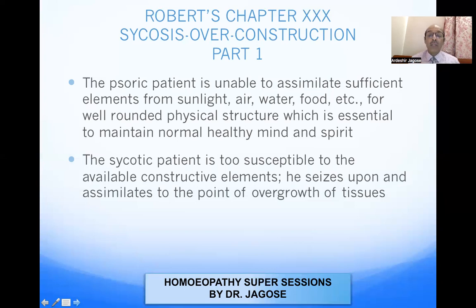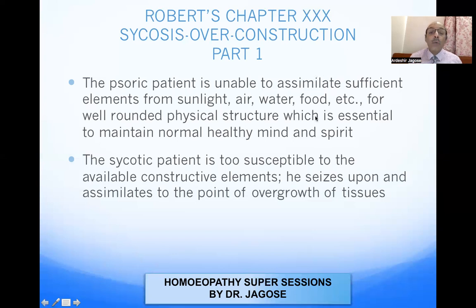The psychotic patient is too susceptible to the available constructive elements — he absorbs and assimilates them to the point of overgrowth of the tissue. In the psoric stigmata, there is an inability to assimilate food, air, sunlight, and nutrients from all these sources, whereas in the psychotic stigmata, there is assimilation but to the point of overgrowth.